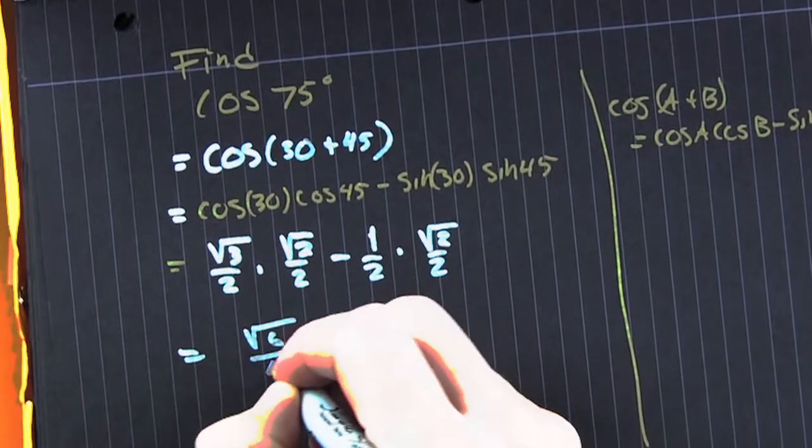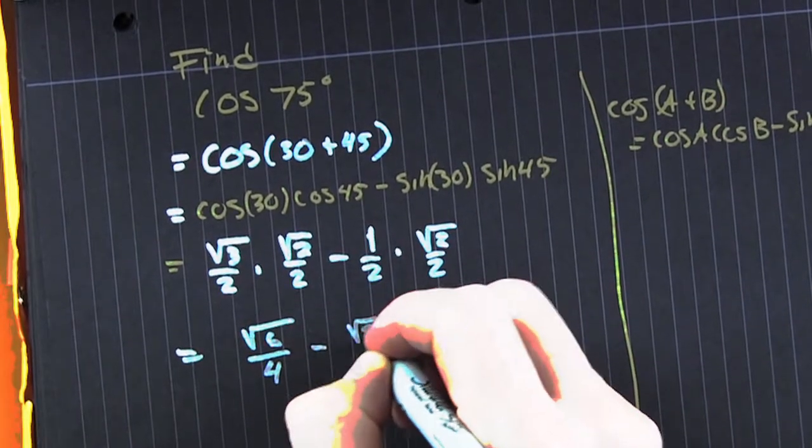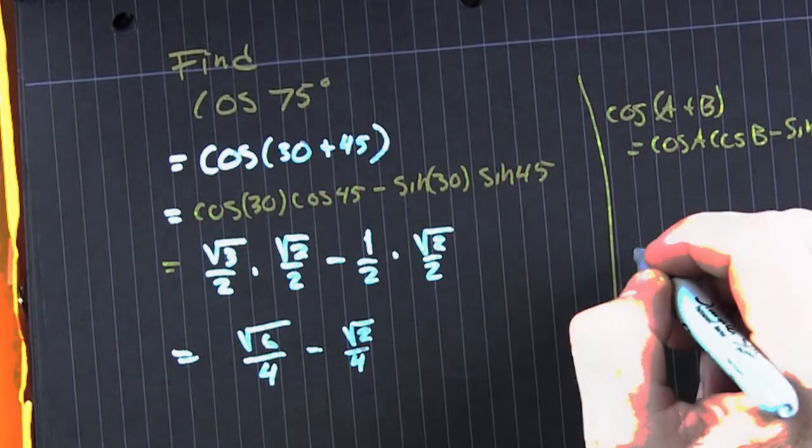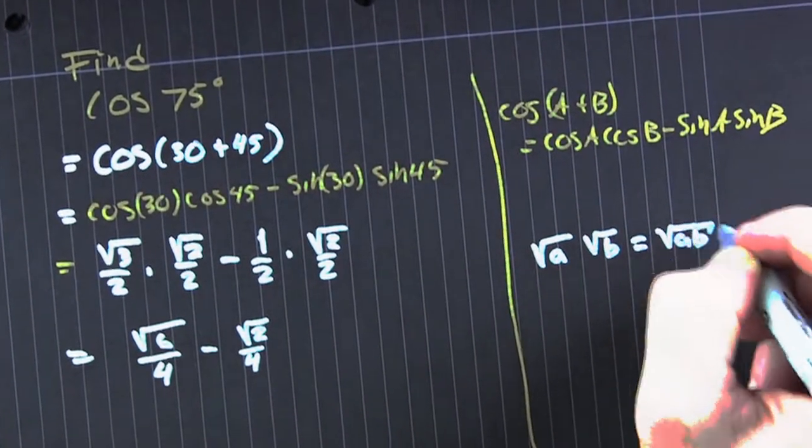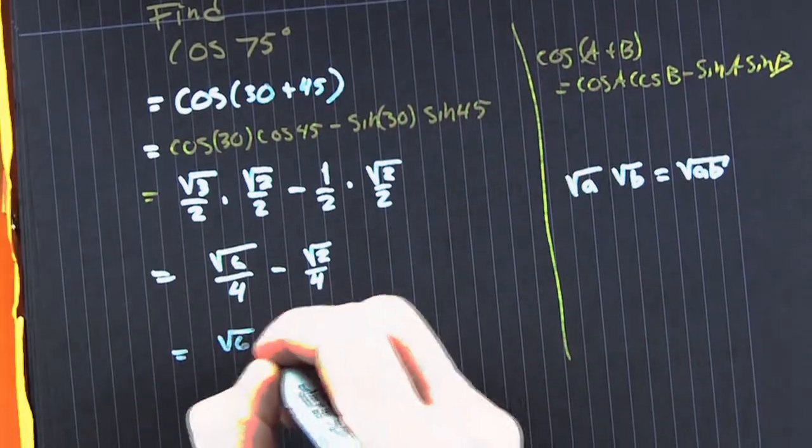Now let's clean up those fractions. But I know you're wondering, how did you get root 6? Well, the root of the product is the product of the roots and vice versa. So we took that 3 times that 2 and that's how we got 6.